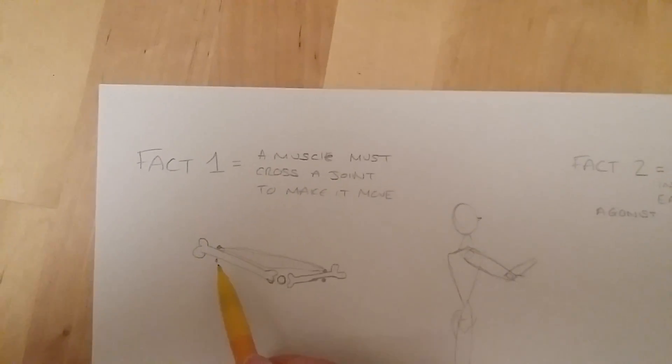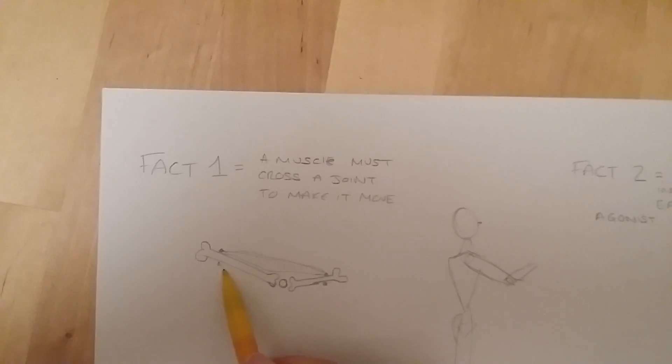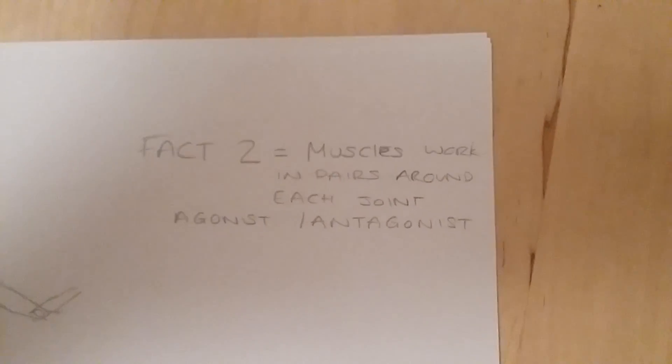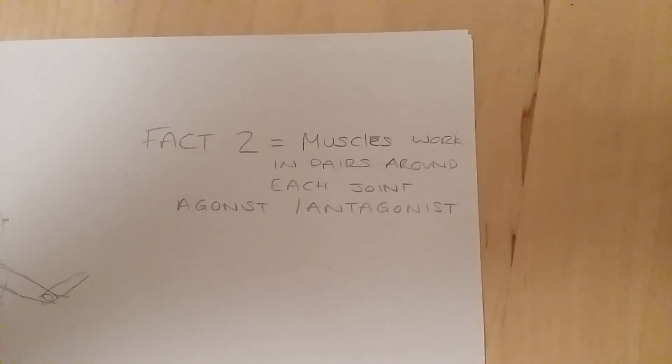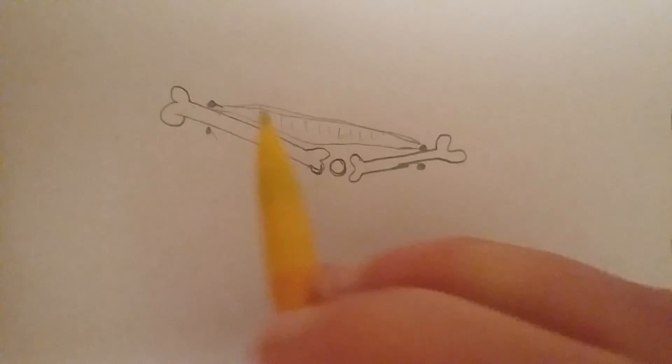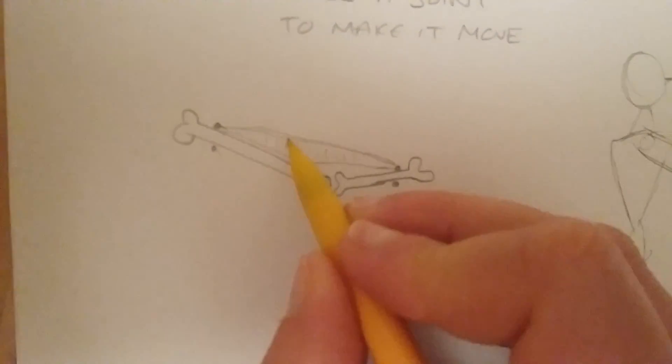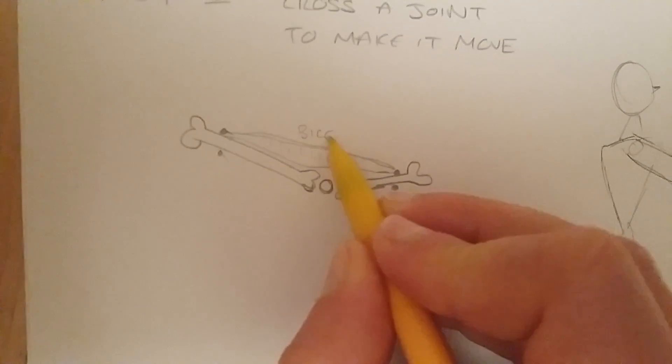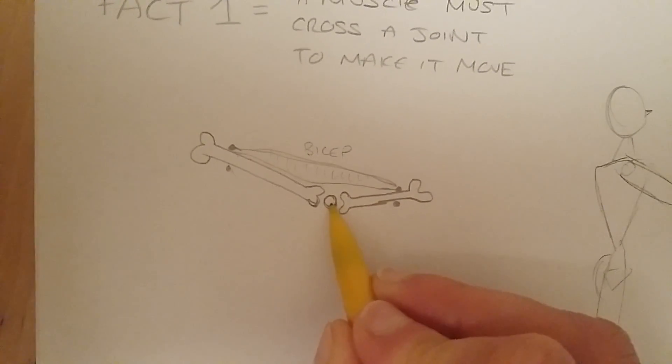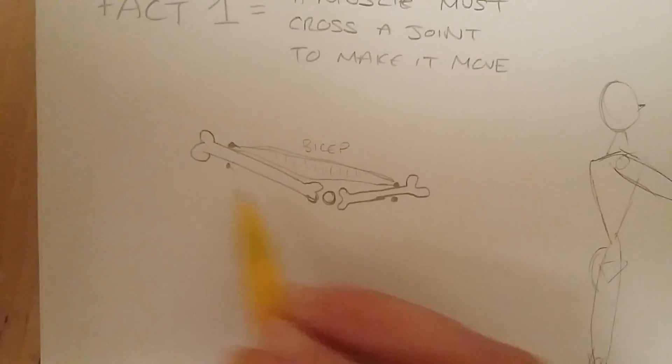Now the other side of that is that there is going to be another muscle on the other side. So this is now fact two. Muscles work in pairs around each joint, giving you an agonist and antagonist pair. So let's take this that we had a moment ago. Let's say this one is your bicep, for example. That's quite an easy one to suggest.